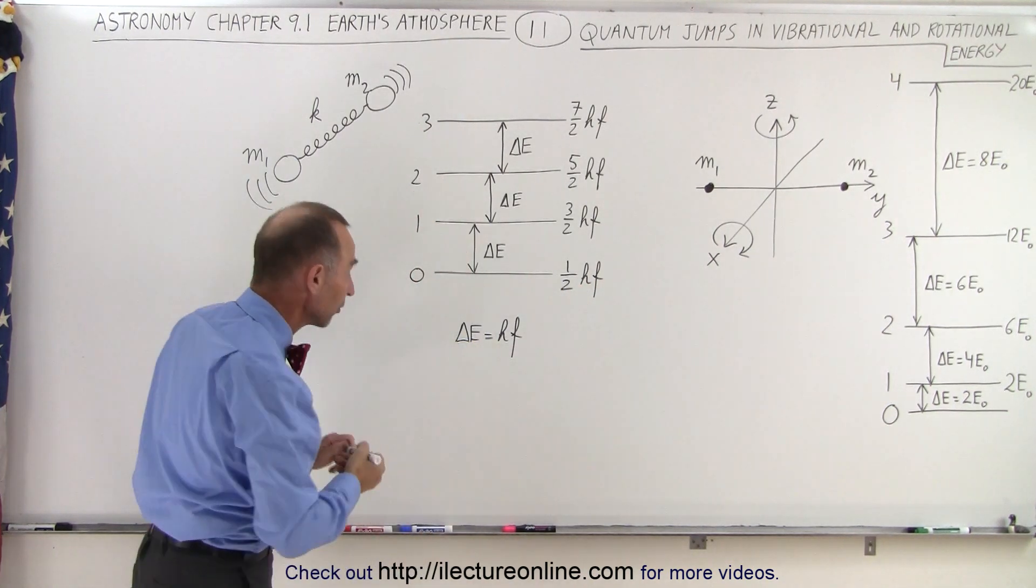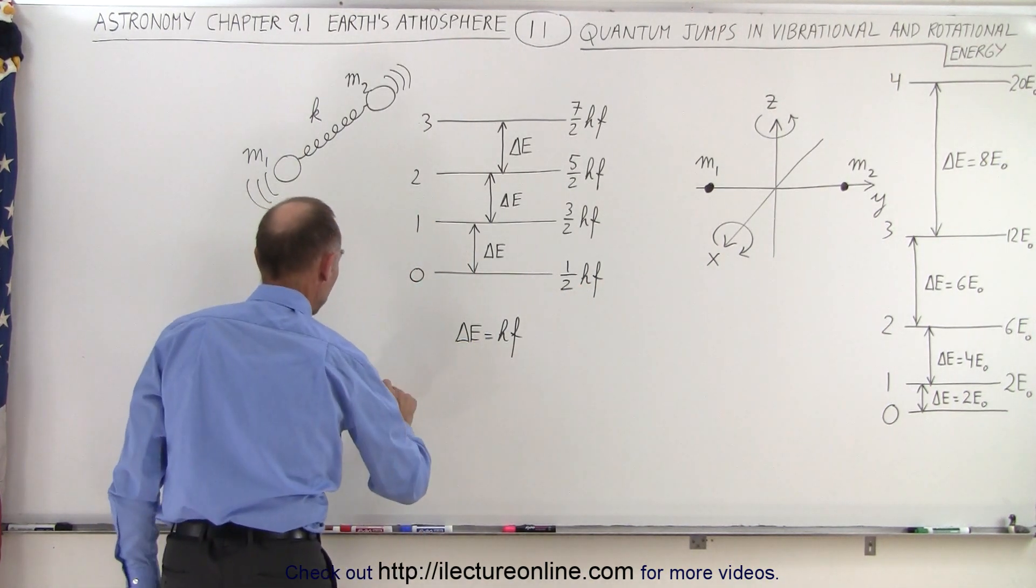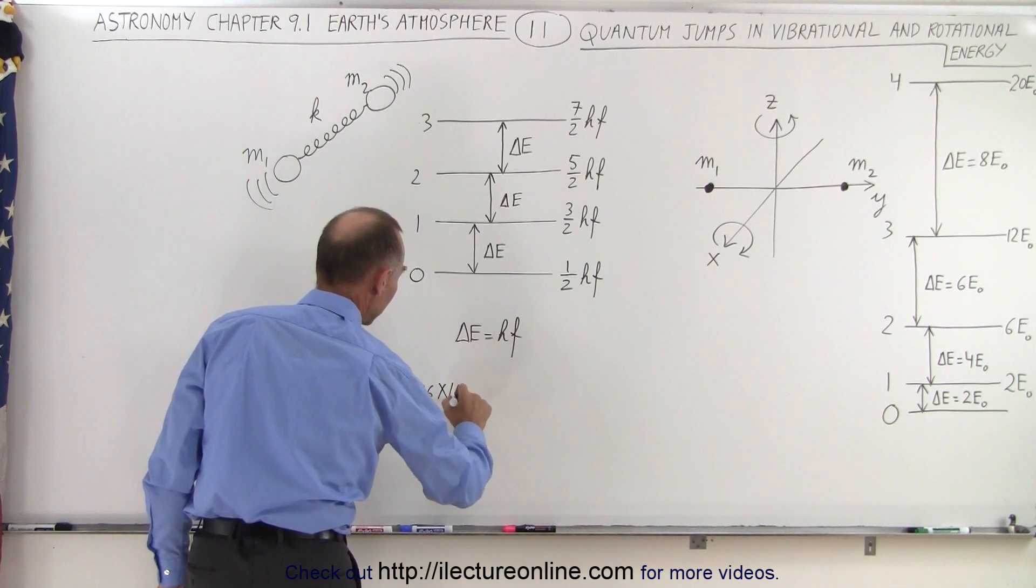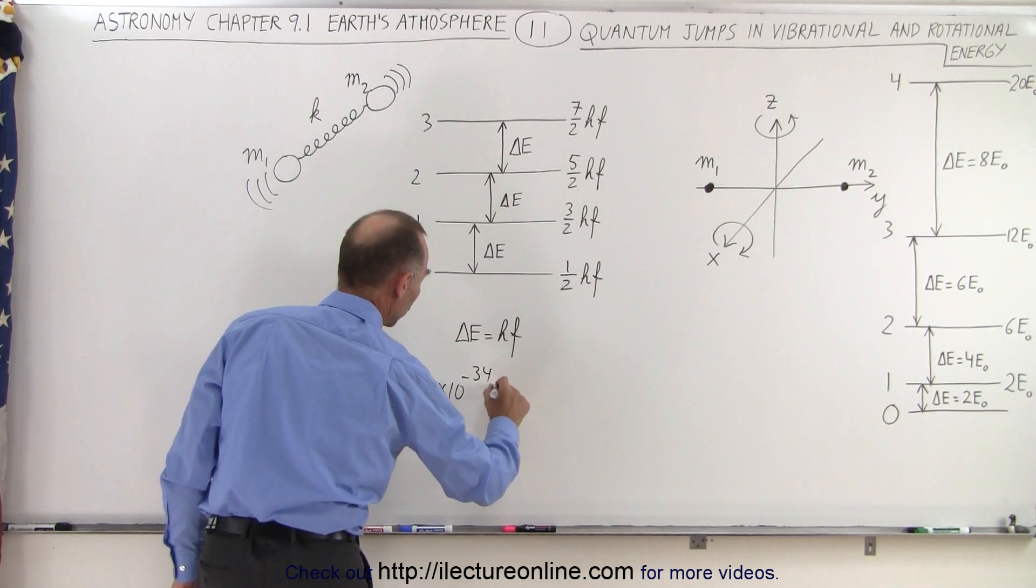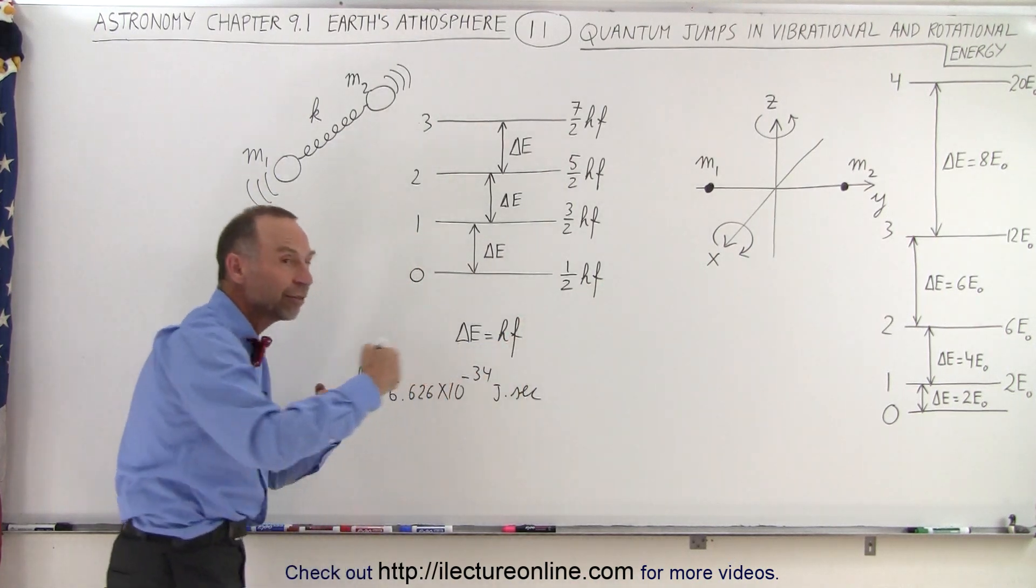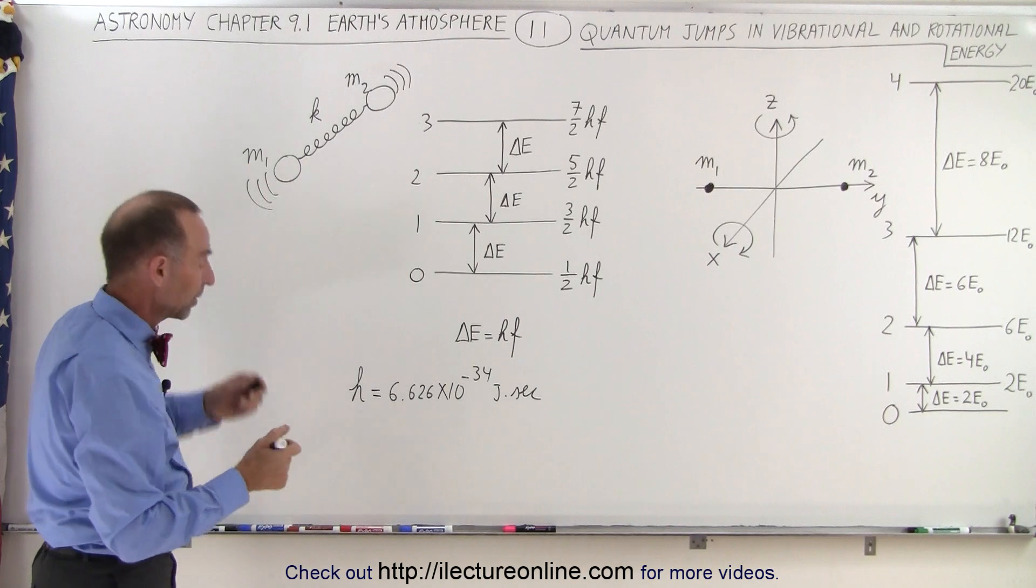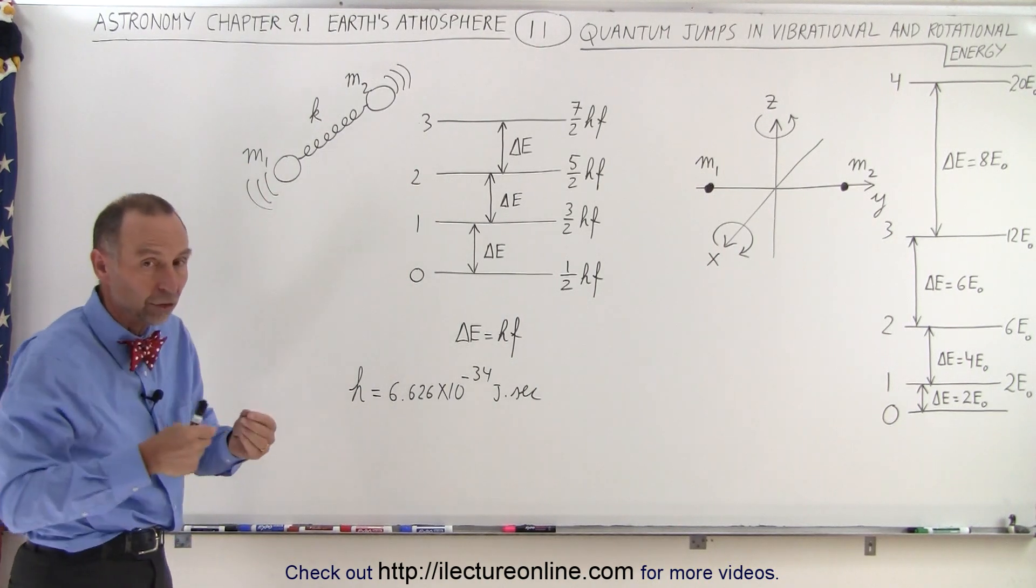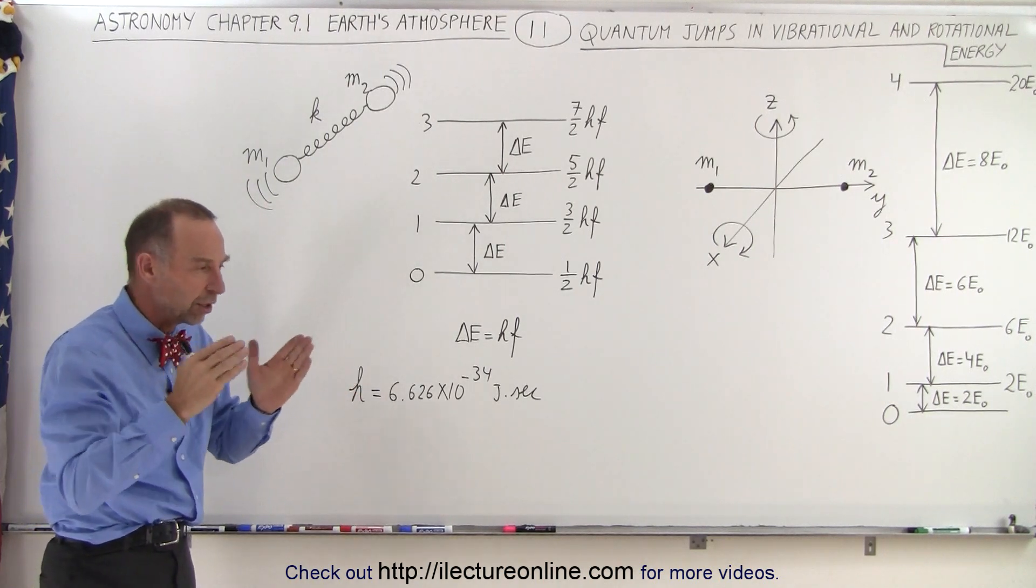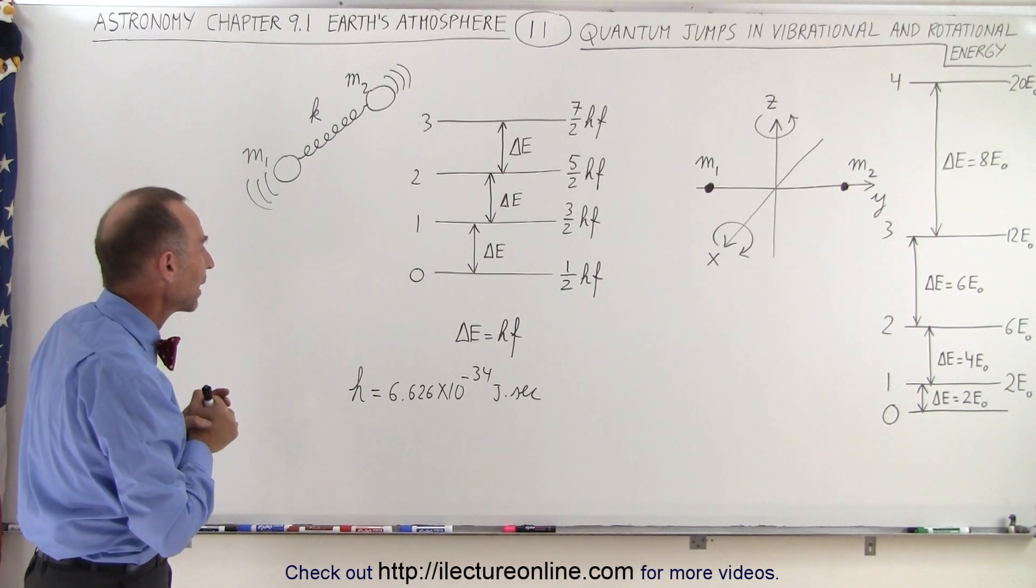H is Planck's constant, so h is equal to 6.626 times 10 to the minus 34 joules times seconds, and f would be the frequency of the vibrational mode of that particular oscillator. So it depends upon the structure of the molecule, the mass, and the spring constant, which is basically the force caused by the bonding between the atoms.